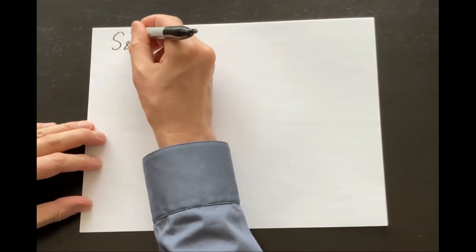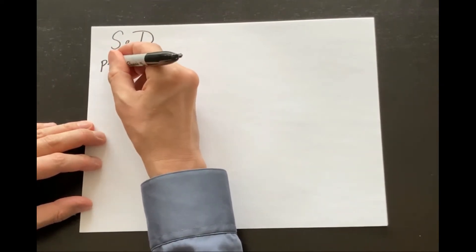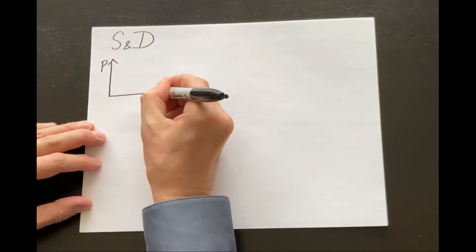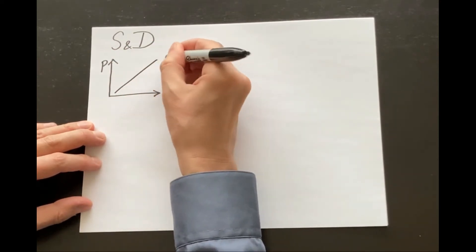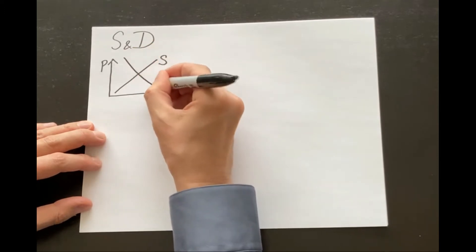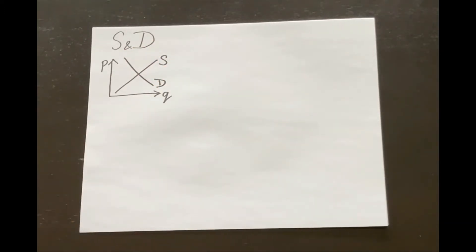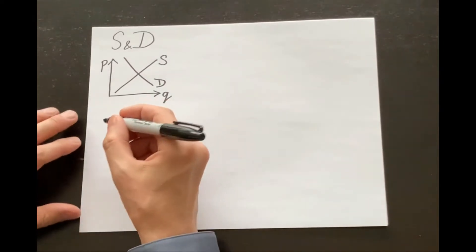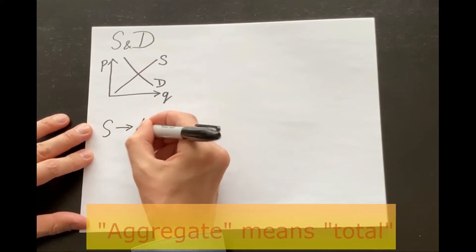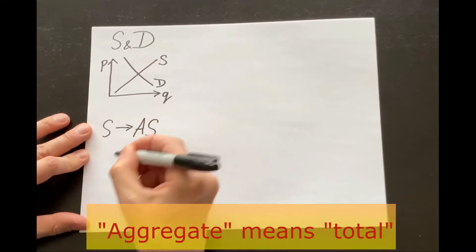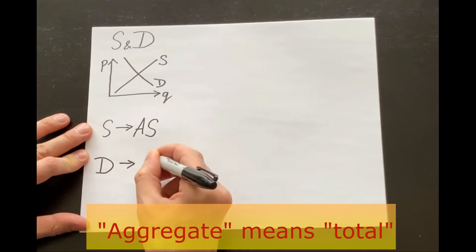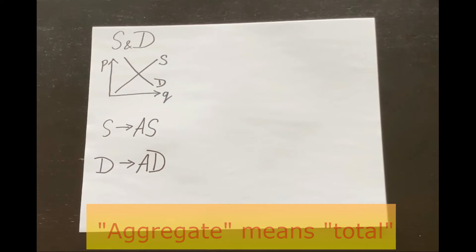Do you remember the supply and demand model? Price and quantity, supply and demand. Now we are going to take this model, supply and demand of one product, and apply it to the entire economy, to all goods and services produced. Supply of one product will become aggregate supply of all goods and services produced in this country. And demand of one product will become aggregate demand for all goods and services in this economy.